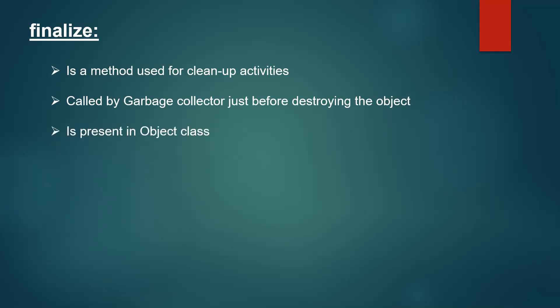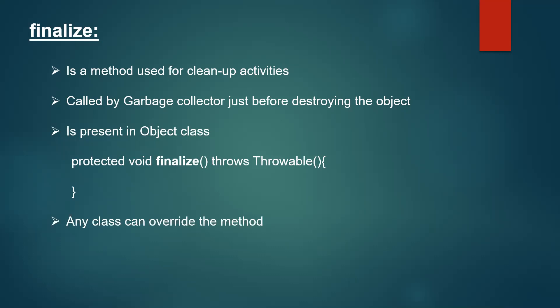The finalize method is present in the Object class, and since every class in Java implicitly extends the Object class, any class can override this finalize method. The syntax is: protected void finalize() throws Throwable — this is the signature of the finalize method present in Object class.